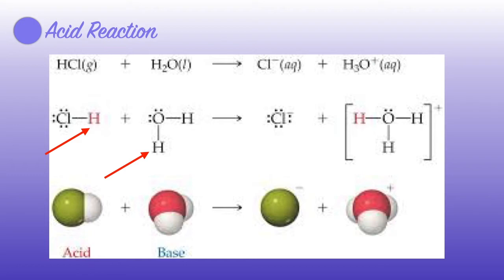The red arrow in HCl is pointing to the hydrogen ion that will be donated, and in water the red arrow is pointing to the hydrogen ion that will stay. In the product side of the reaction, you can see water accepted a proton, now forming H3O+, also known as a hydronium ion.